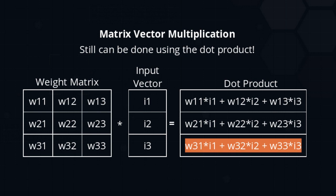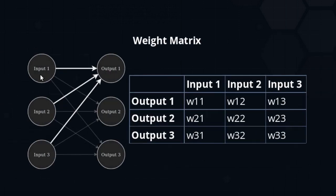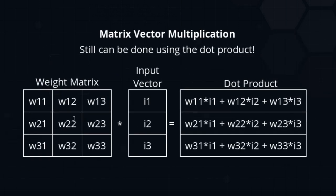One important thing: I have put the matrix first and the input vector second. For the math to work out, it's very important to take the matrix first and then multiply by the vector. If these two terms are flipped around, we get very different results because of how matrix-vector multiplication works. In practice, we just loop over each output and do a weighted sum just as we have done before, and then we will find a way to make everything even easier with NumPy.